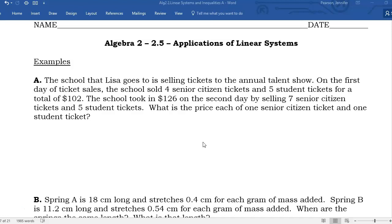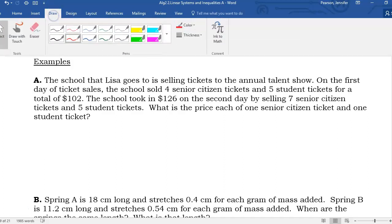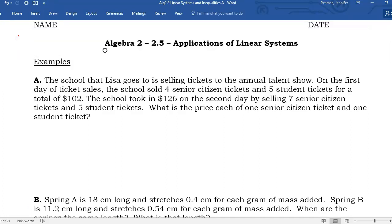I'm going to use variables to represent students and seniors. Sometimes you have nice things where you can go like A and B or P and Q, depending on what you're talking about. S and S, I'm just going to stick with X and Y. So I'm going to let seniors be X, and I'm going to let students be Y.